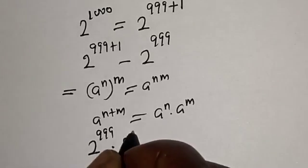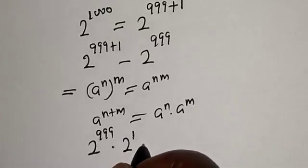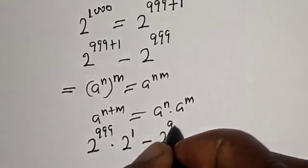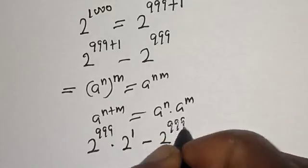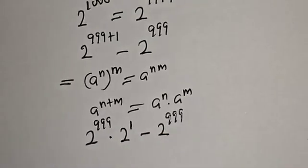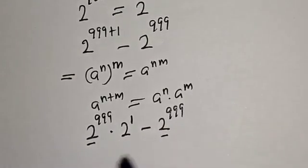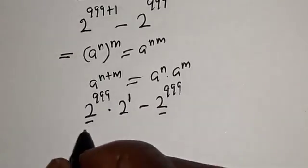We have 2 raised to power 999 multiplied by 2 raised to power 1, minus 2 raised to power 999. Now, 2 raised to power 999 is common — let's bring it out.